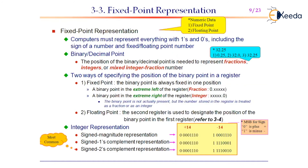Now, what is fixed point representation? Whenever there is a binary point, it cannot be directly represented in a processor's register. There are two portions needed: one before the binary point and one after it. For example, '1101' may represent the integer part and '1011' the fraction part. Two registers are used — one to hold the value before the binary point and one for after.